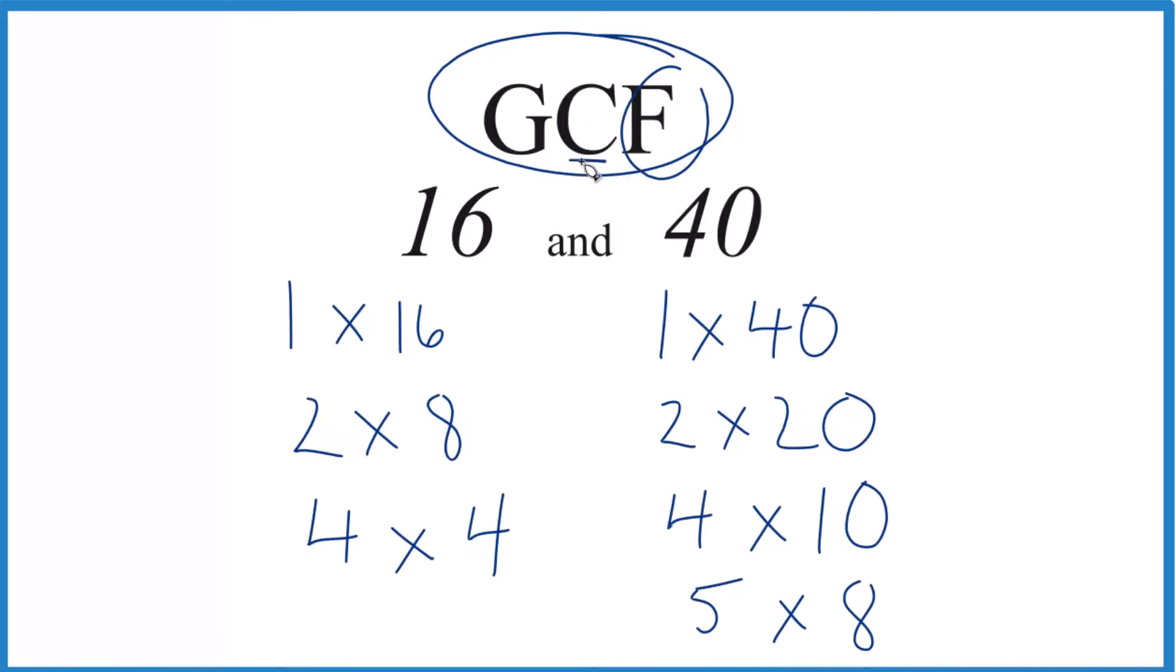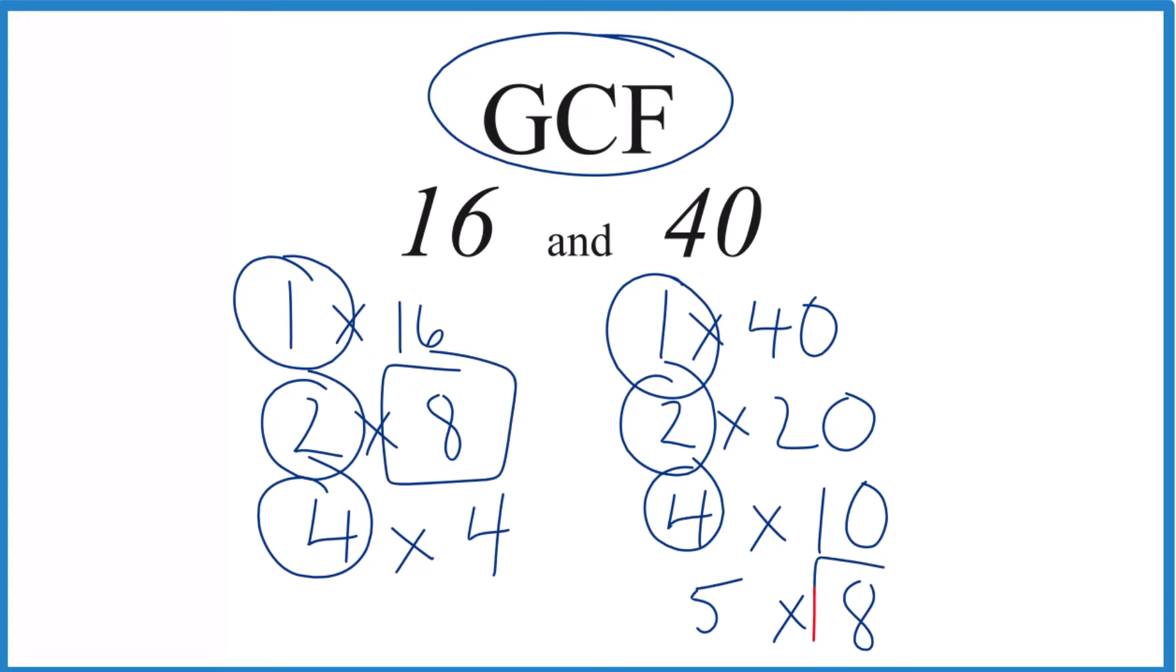At this point, we have the factors. We're going to look at what's in common and then choose the greatest common factor. We have 1, that goes into 16 and 40 evenly. 2, that's a common factor. We have 4, that also goes into 16 and 40. But the greatest common factor is 8. So the GCF for 16 and 40 is 8.